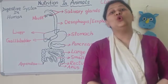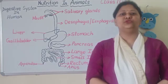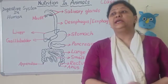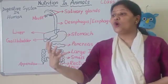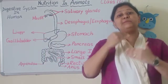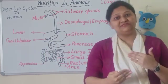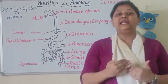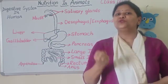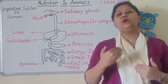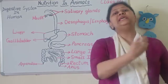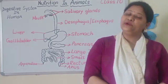The third is holozoic mode of nutrition. Iska matlab kya hai ki complex organic food ko hum lete hain andar, usko simple mein convert karte hain, and then jo usmeh nutrients hota usko absorb karte hain, aur unwanted substance ko hum egest out karte hain.